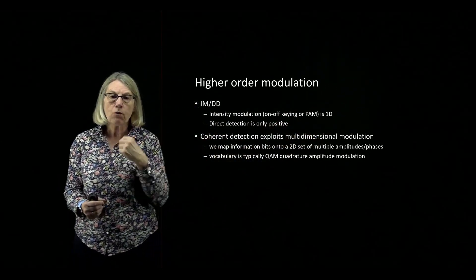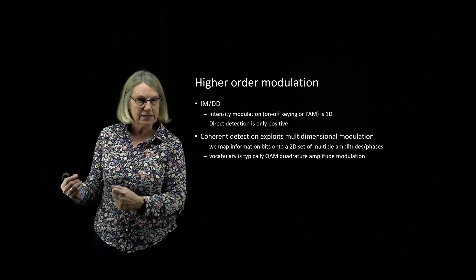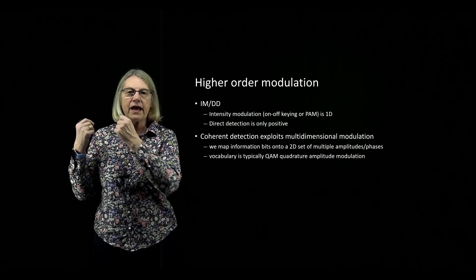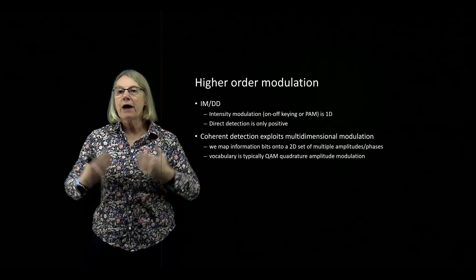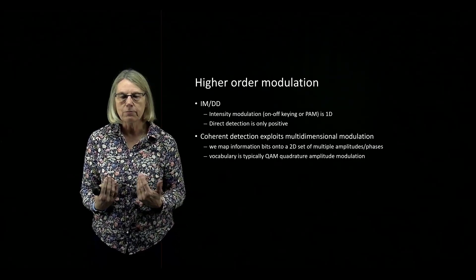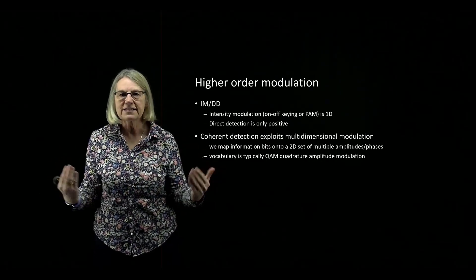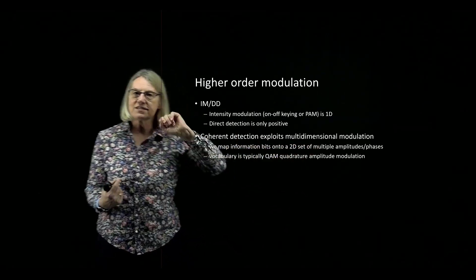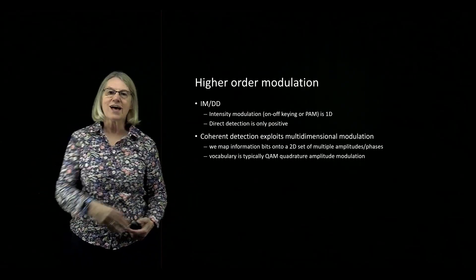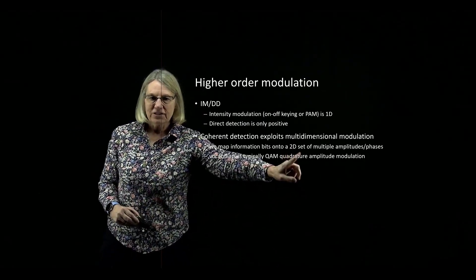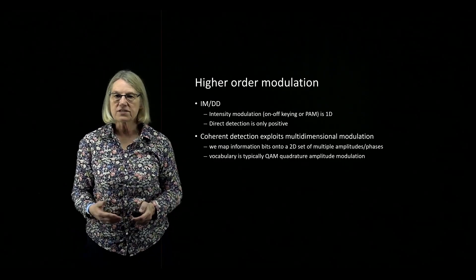With coherent detection, we get into a multi-dimensional modulation format. We're going to map information bits into a two-dimensional set, where the two dimensions are amplitude and phase. Because I'm adding another dimension, it becomes a much more powerful solution for communications. Theoretically, you can do more with coherent detection basically due to this change from one-dimensional to two-dimensional manipulation. The vocabulary we use for this higher-order modulation in two dimensions is quadrature amplitude modulation, or QAM modulation — it's often what you see when discussing coherent detection.